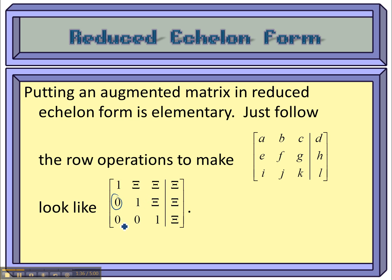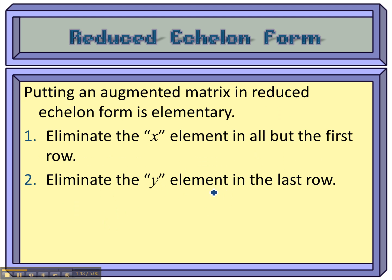We don't eliminate that one, we want to keep that, in that order. If we were to keep going on that same one, we can put it into row reduced echelon form. So to put it in reduced echelon form, our triangular form, you eliminate the x element in all but the first equation, eliminate the y element in the last row.